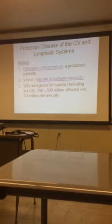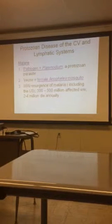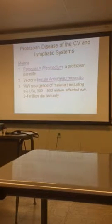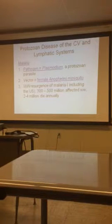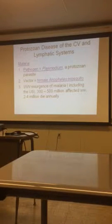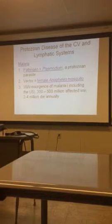Malaria — we've talked about this before, so this is just a recap. The pathogen is Plasmodium, a protozoan parasite. The vector is the female Anopheles mosquito. There was a lot of malaria during the construction of the Panama Canal. There is now a resurgence of malaria, including in the United States. Globally, 300 to 500 million are affected, and 2 to 4 million die from malaria annually.